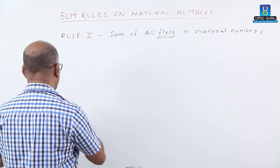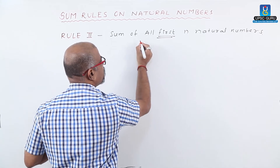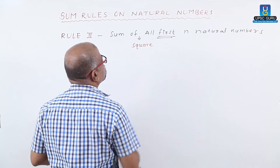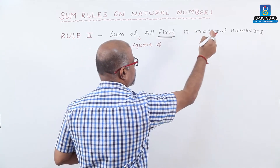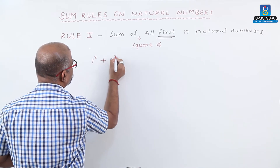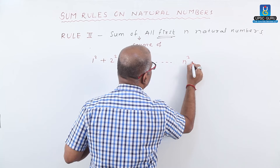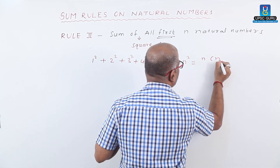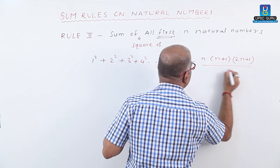Rule number 2: the sum of squares of the first n natural numbers. That is, 1 squared plus 2 squared plus 3 squared plus 4 squared up to n squared. The formula is n into n plus 1 into 2n plus 1, divided by 6.